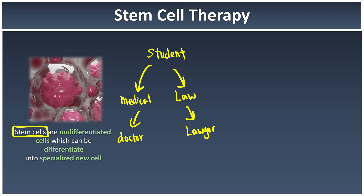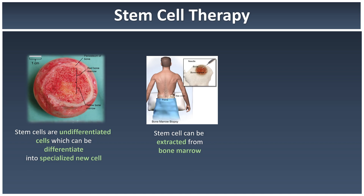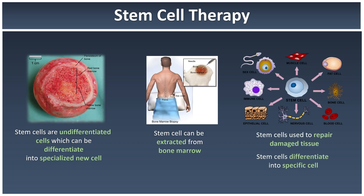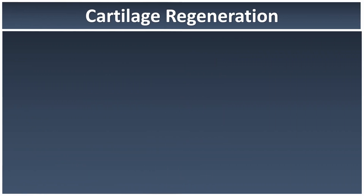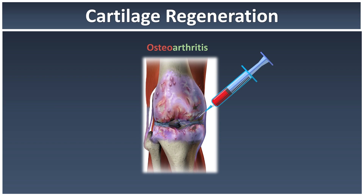Stem cells can be found in the bone marrow, where they can be extracted from our backbone or spine. These stem cells can be used to repair damaged tissue by letting them differentiate into specific cells. In fact, all of our body cells are derived from stem cells. For example, in cartilage regeneration, a patient with osteoarthritis has broken cartilage — we can inject stem cells into the cartilage.